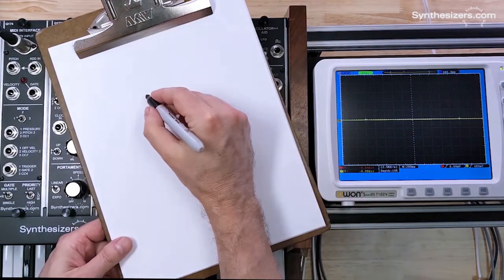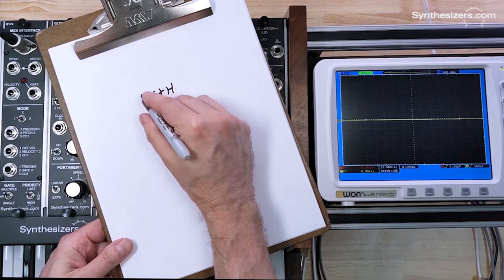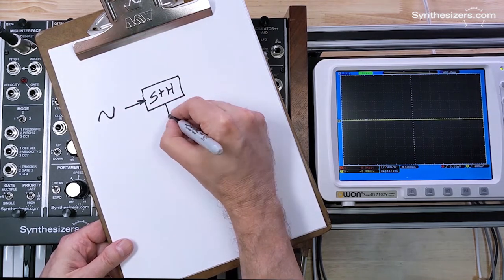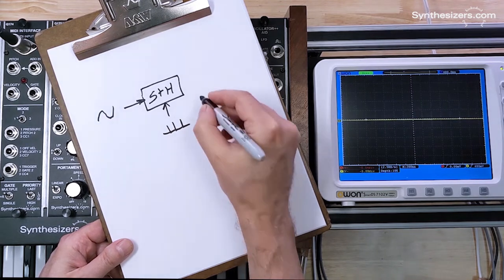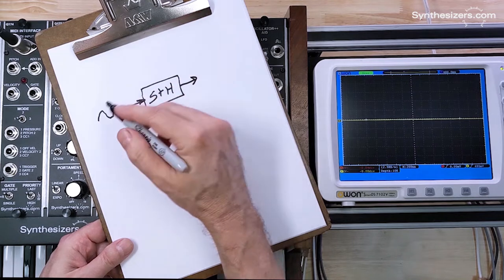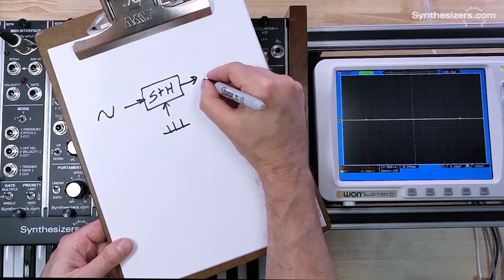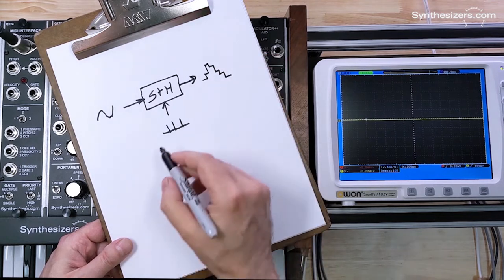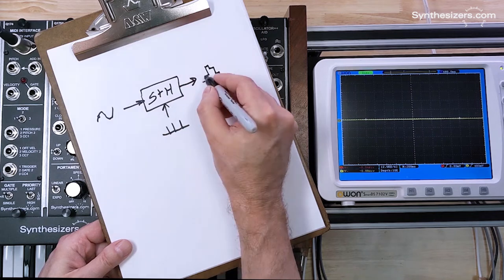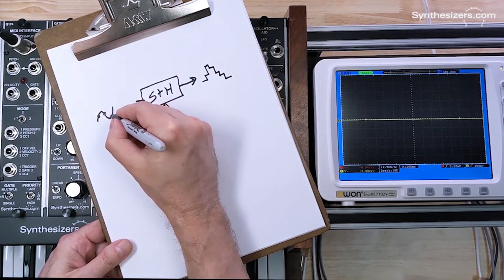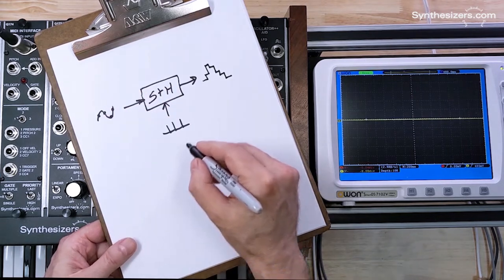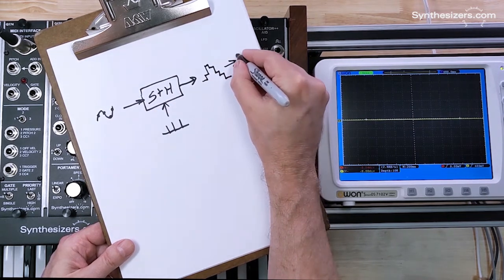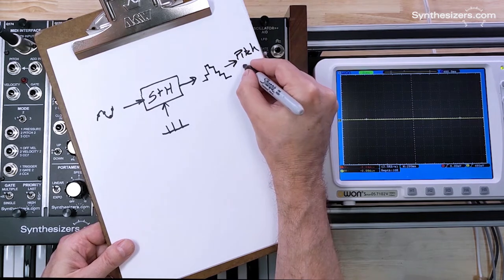Here's how a sample and hold circuit works. We take a signal input — it can be anything — and we have a clock input. The output is the input signal that is sampled at each one of these clock pulses. Each time there's a clock pulse, the input is sampled and that's sent to the output. You'll get samples all throughout that waveform and end up with stair steps on the output. In this case we're going to use that as the pitch for oscillator number two.